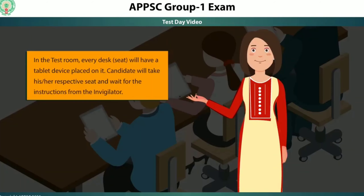In the Test Room, every desk seat will have a TABOT device placed on it. The candidate will take his or her respective seat and wait for the instructions from the invigilator.